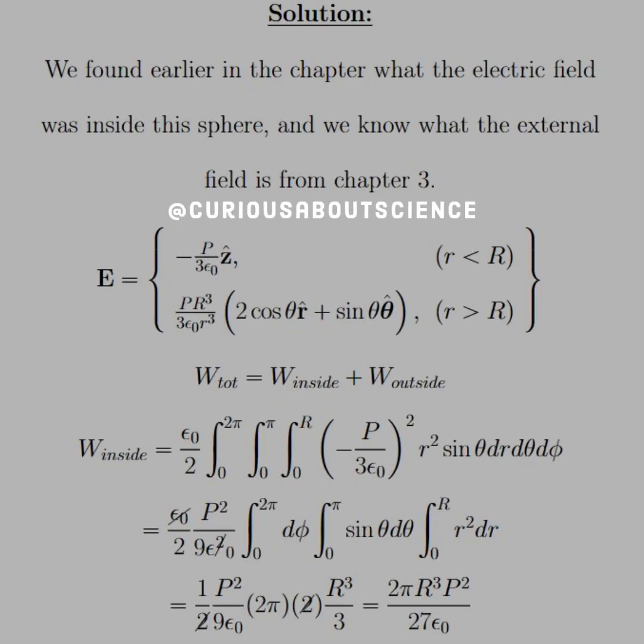Alright, so for our solution, let's recall that we found earlier in the chapter what the electric field inside the sphere is, and we know what the external field is from chapter 3. So, in terms of the polarization P, for anything inside the sphere, we have negative P over 3ε₀ in the z-hat direction.